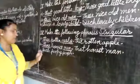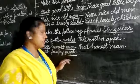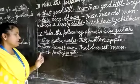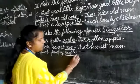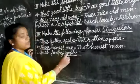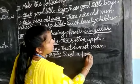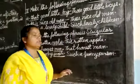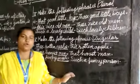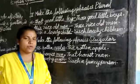Next, question number C: 'Such funny people.' Here, people is plural form. The singular form of people is person. So our answer will be: such a funny person. Now watch the video and do the given exercise. Thank you.